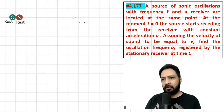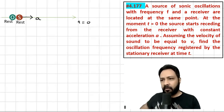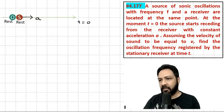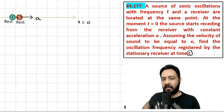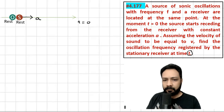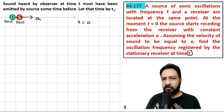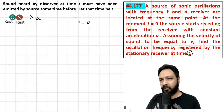At t = 0, the source starts moving with constant acceleration. We have to find the frequency registered by the stationary observer at time t. We should understand that the frequency the observer hears at time t must have been emitted sometime earlier. So sound heard by the observer at time t must have been emitted by the source at some earlier time — let that time be t1.